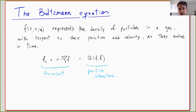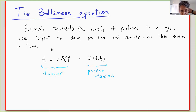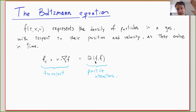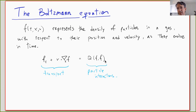We have a function f that represents the density of particles with respect to their position and velocity — approximately how many particles we have at each location and for each velocity. The left-hand side of the equation is a pure transport equation: if particles moved in straight lines following their velocities, the transport equation would equal zero. But there is interaction between particles encoded in the Boltzmann collision operator Q(f,f) — a quadratic operator accounting for binary interactions.